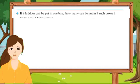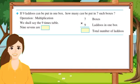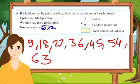Let's see next example. If 9 ladus can be put in 1 box, how many can be put in 7 such boxes? We have to do multiplication. 7 boxes multiply by 9 ladus in each box. 7 multiplied by 9 means 7 times 9, or we can say the 9 times table, 7 times: 9 sevens are 63. Total number of ladus are 63.